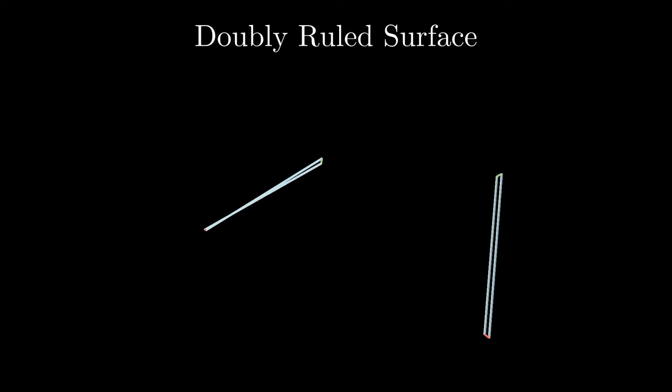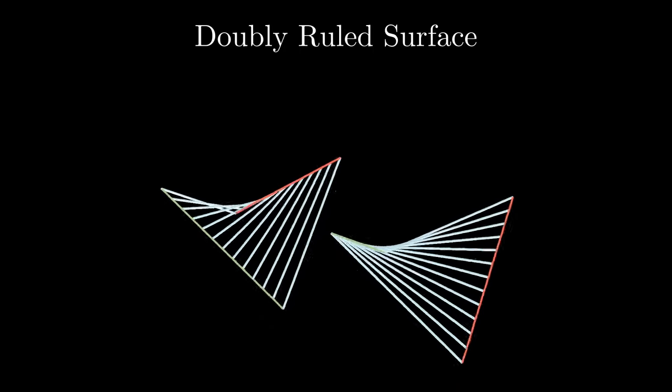Hyperbolic paraboloids are the same in this way, as in they have two distinct rulings that you can form the surface with.